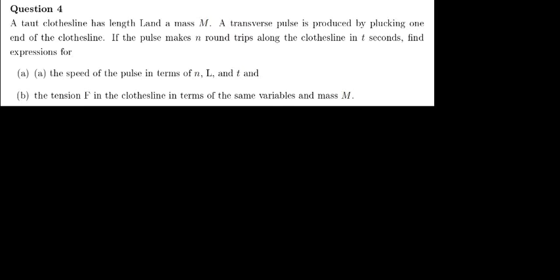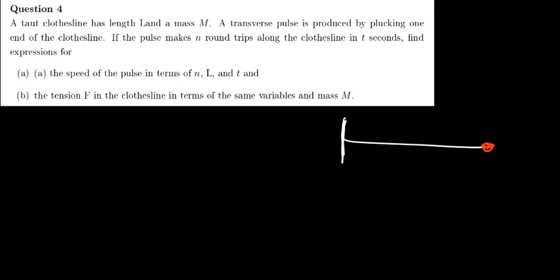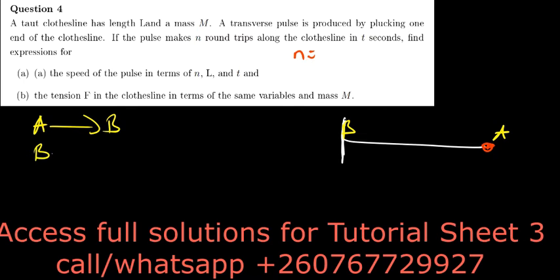One thing we have to understand is that if we have a string, let's say we have a loop attached here in a straight line and you pluck it from one end, a wave is going to be generated. We don't know how many round trips it's going to make — we've been told the number of round trips is given by N. The distance is going to move from point A to point B, then from point B back to point A.